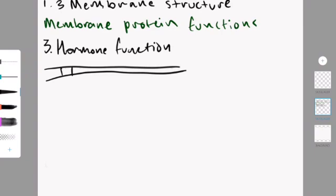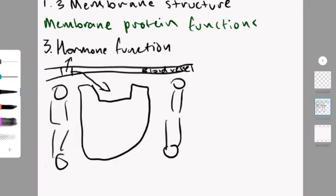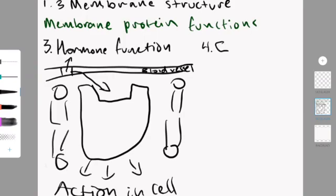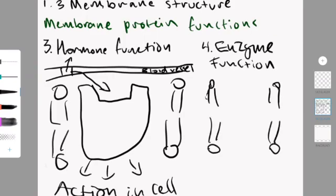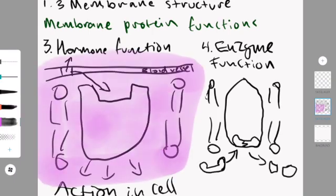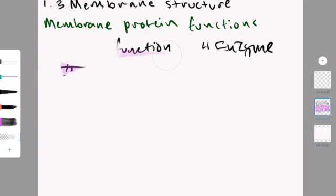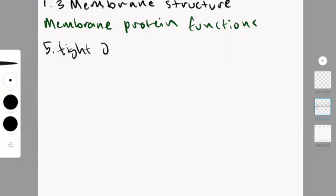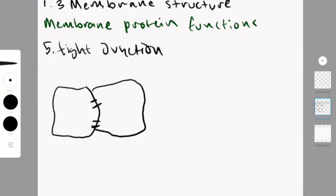The third function is the hormone function. Essentially, you have this hormone in the blood vessel, and you put it into a protein in the membrane, and it leads to actions within your cell. The fourth function is the enzyme function. Essentially, you can use the protein to create reactions, such as breaking whatever that is.